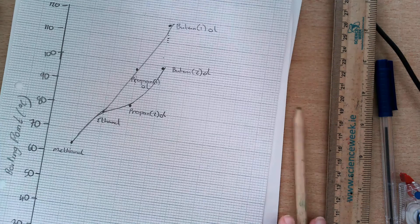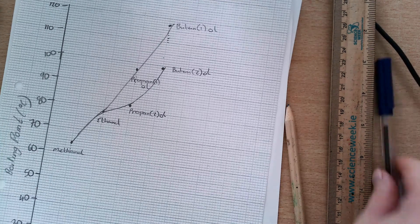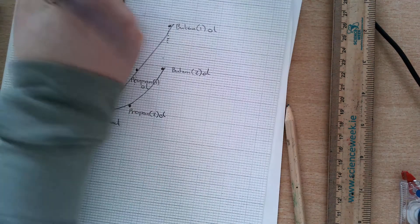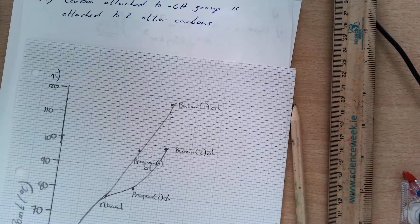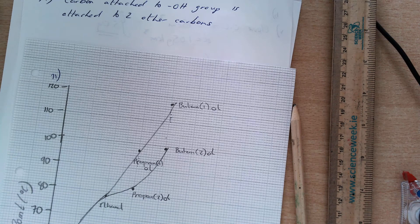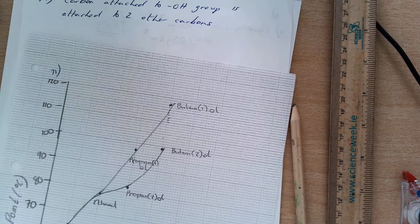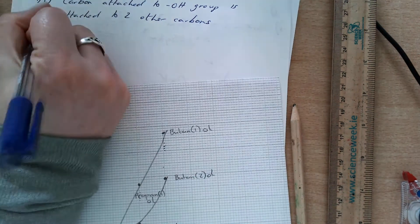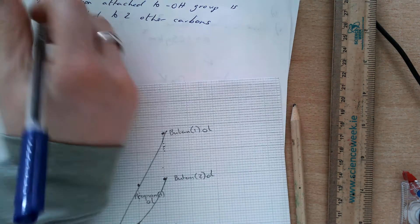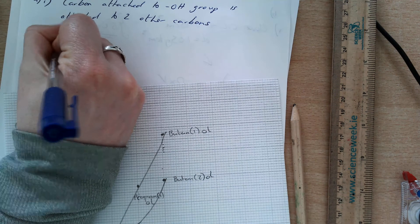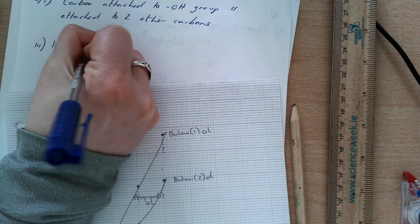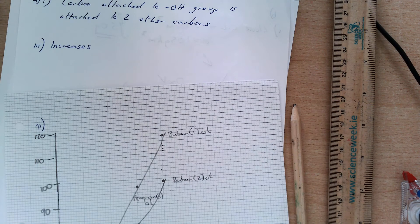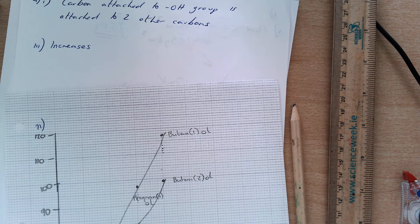We're asked here then for part 3, state and explain the trend in boiling points of the four primary alcohols shown as their relative molecular masses increase. So, as I can see, it's increasing. So, we're asked firstly to state the trend: my boiling point increases.